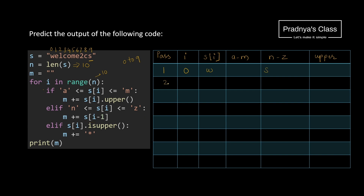In the next pass, I is 1. The next character is E — it falls in the range of A to M, so it satisfies the first condition. We convert the character to uppercase. The previous string is S, and E gets converted to capital E. In pass 3, I is 2 and the character is L — it satisfies this condition and gets converted to capital L. In pass 4, I is 3 and the character is C — it also gets converted to capital C.